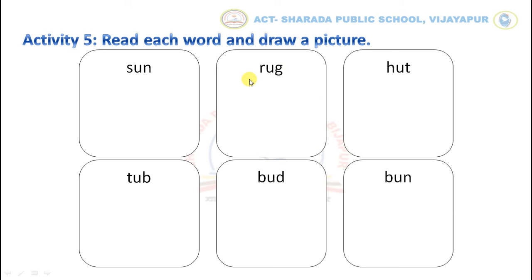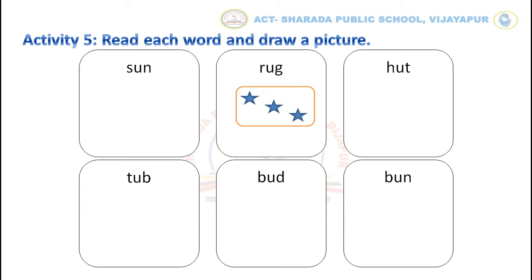Let us draw a picture. First, draw a rectangle shape and make some beautiful designs which you like on your rug. Like this. Children, this is how you have to complete this activity.